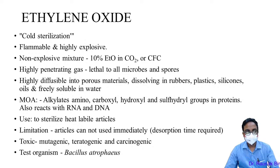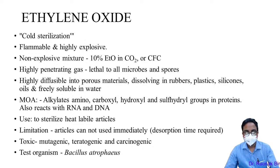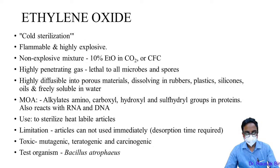Ethylene oxide is used mostly for heat-labile articles. Limitation: articles cannot be used immediately due to a desorption time — the ethylene oxide must dissolve and release out. It is highly mutagenic, teratogenic, and carcinogenic, so its use has decreased. The test organism for biological indicator is Bacillus atrophaeus.